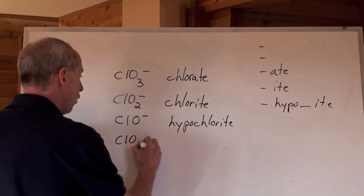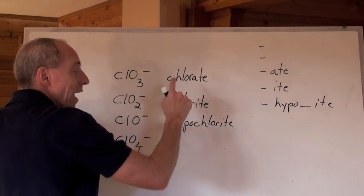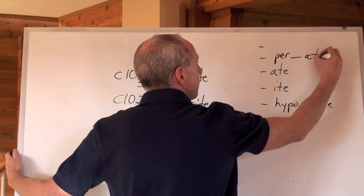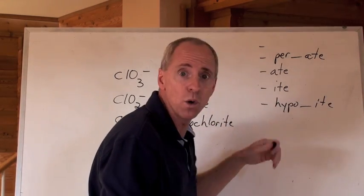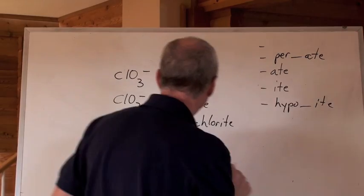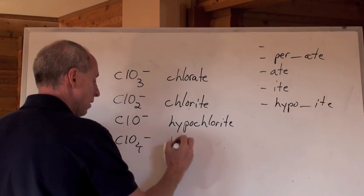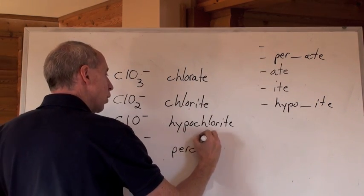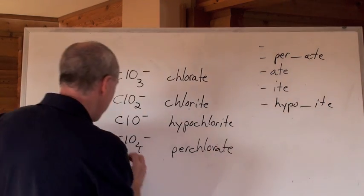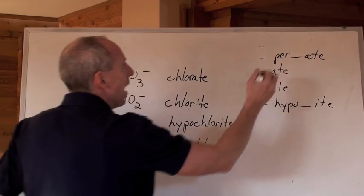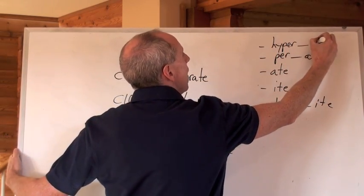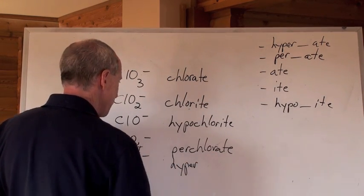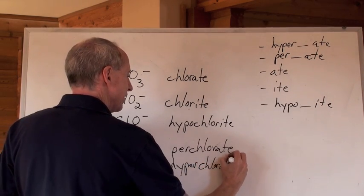What is ClO4 negative going to be? Well, that's one more than an ate. And one more than an ate is actually called a per-ate. Per? Per? Well, hypo, hyper. But wait, I'll show you why. It's not hyper. So ClO4 negative would be called one more than an ate is a per-ate. So this would be called per-chlorate. And now, if there was such a thing as ClO5 negative, that's where the hyper part comes in. And it's a hyper-ate. And that would be called hyper-per. Hyper. Hyper-chlorate. There we go.